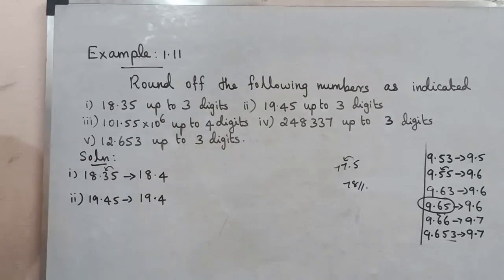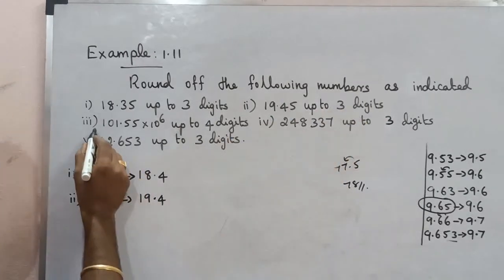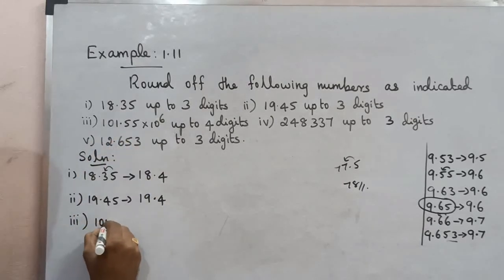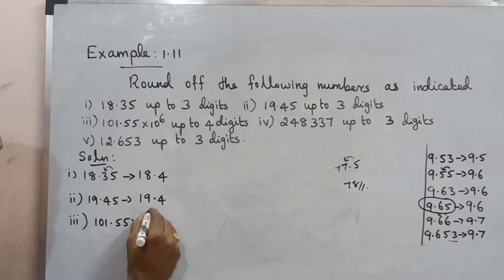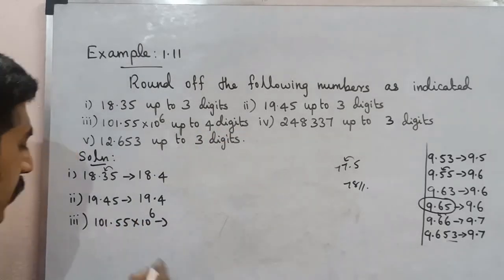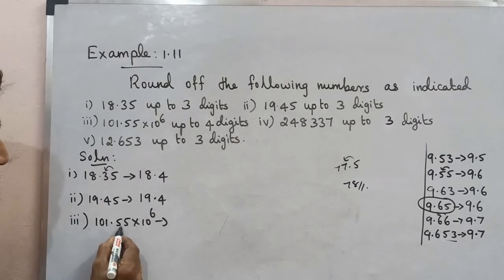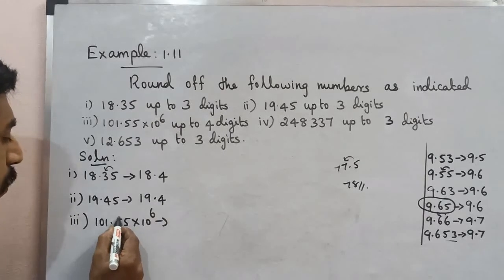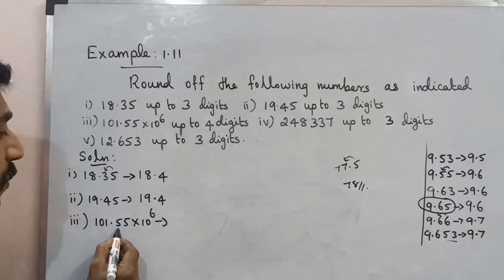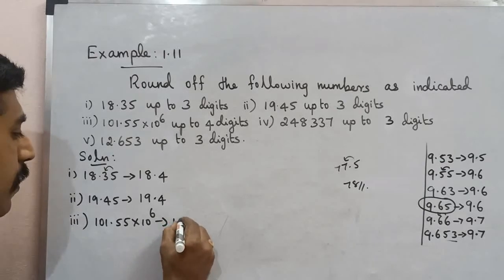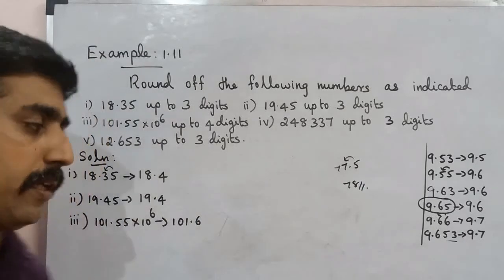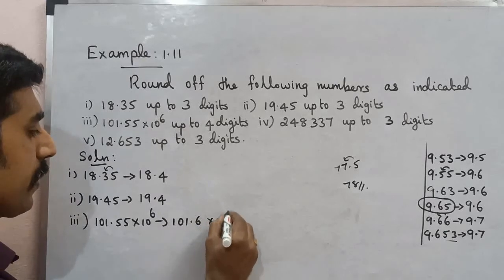Example 3: 101.55 × 10^6, round to 4 digits. Counting 1, 0, 1, 6 — the fourth digit is 6. The last digit dropped is 5. The preceding digit is odd, so we add 1. The result is 101.6 × 10^6.